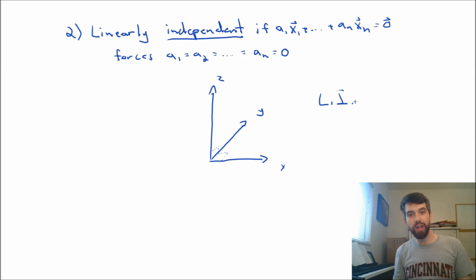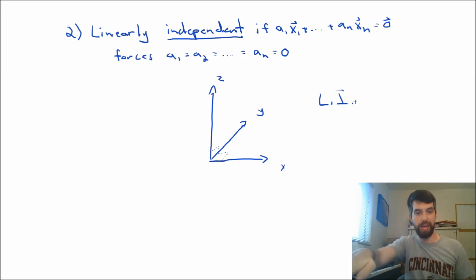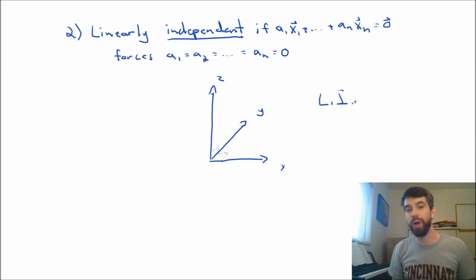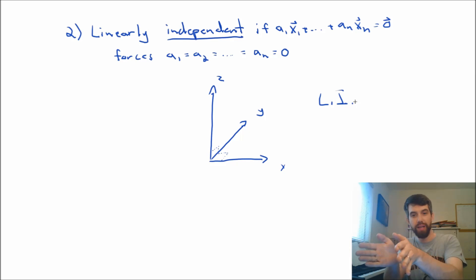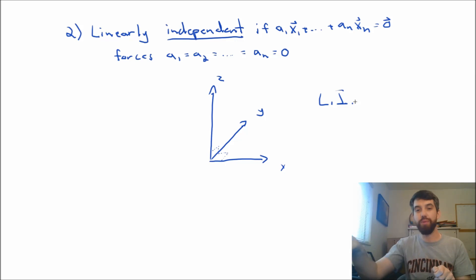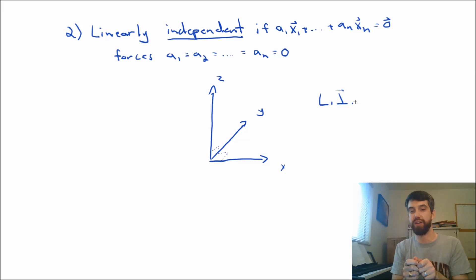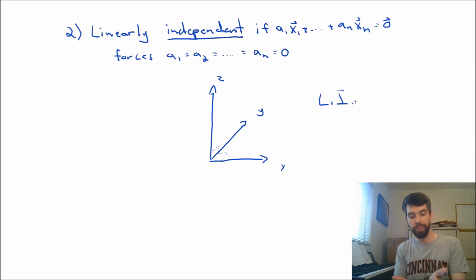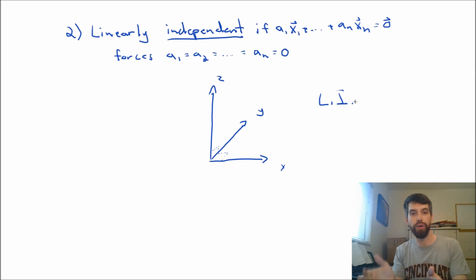Contrast that with three vectors that are all lying in the same plane. If three vectors all lie in the same plane, you could take two of them and write a linear combination of those to get the third — or equivalently, trace a little triangle within that plane to get back to the origin. So three vectors in a plane are linearly dependent, but these three vectors along the coordinate axes are not.